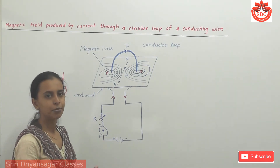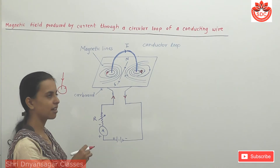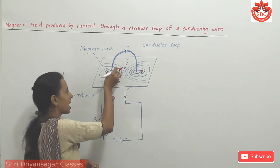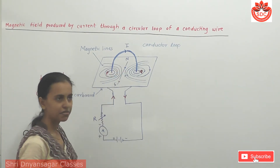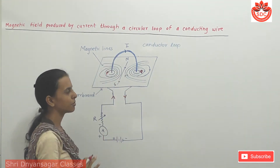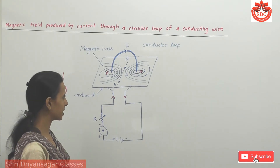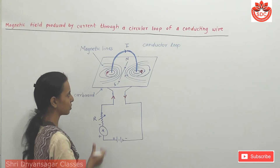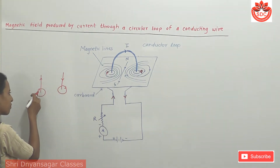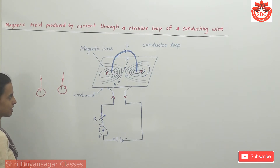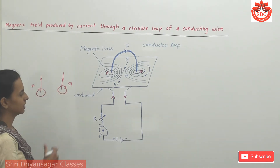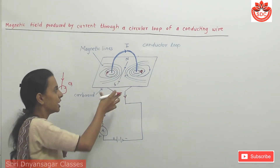In the previous standard, the magnetic lines of force were demonstrated. The magnetic lines of force direction is anti-clockwise from one point and clockwise from another. The direction is determined by the position in the circuit.